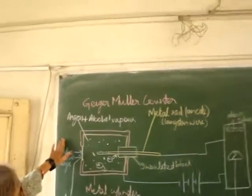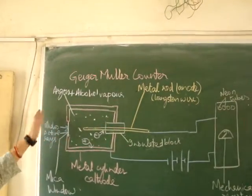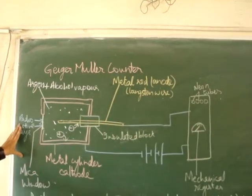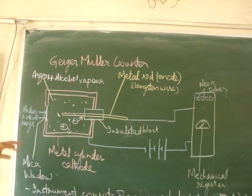Today we will study about Geiger-Muller Counter. It is used to detect number of radiations coming out from a radioactive source.